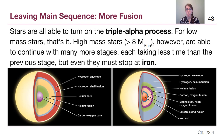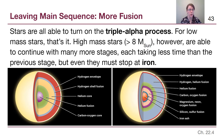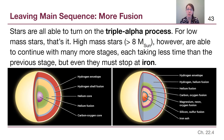For low mass stars like the sun, that's all that's going to happen. Low mass stars go through the proton-proton chain, then the triple alpha process to make a carbon core, and then they're done.